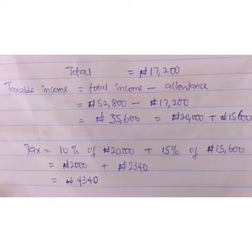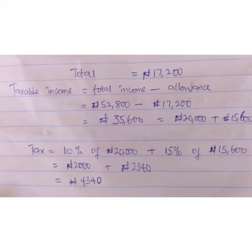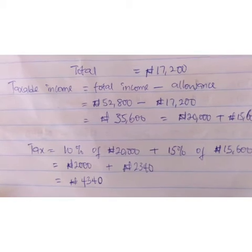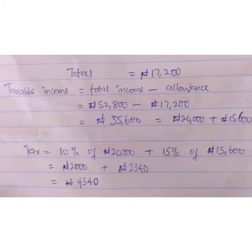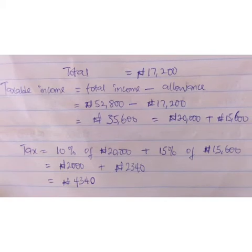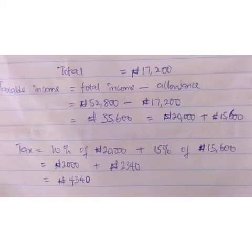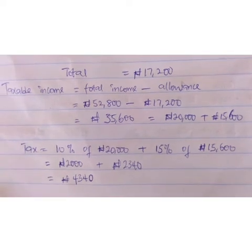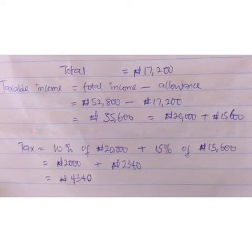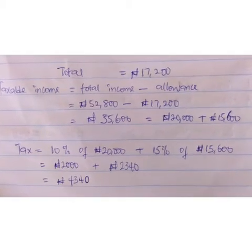We are looking for the amount of tax he pays. We must first get the taxable income: taxable income equals total income minus allowance, which is 62,800 minus 70,200, amounting to 35,600. Calculating the tax: 10% of 20,000 naira plus 16% of 15,600, which gives us 4,340.